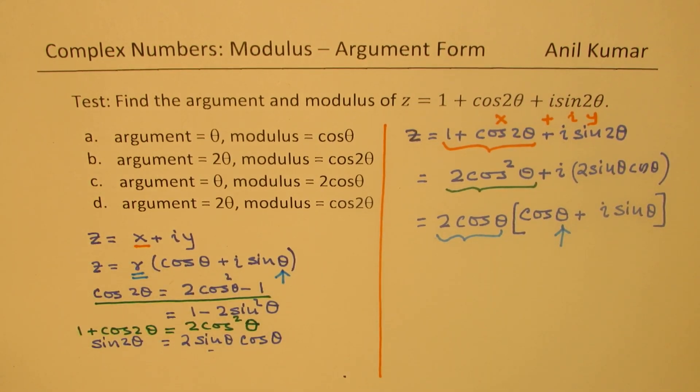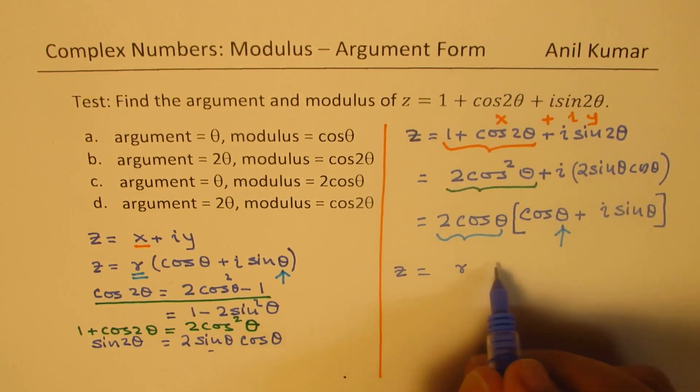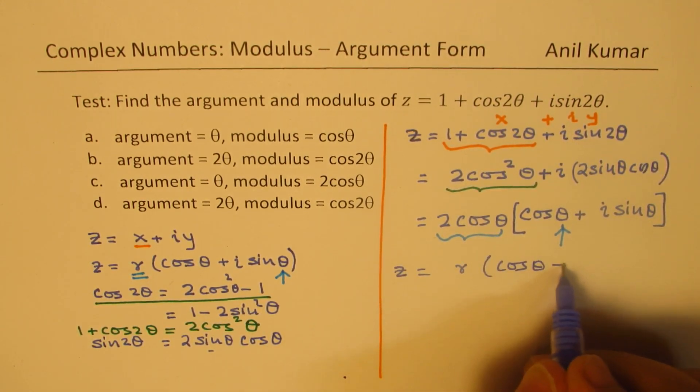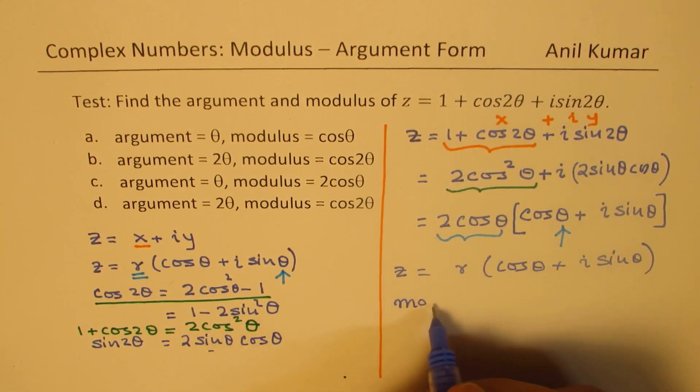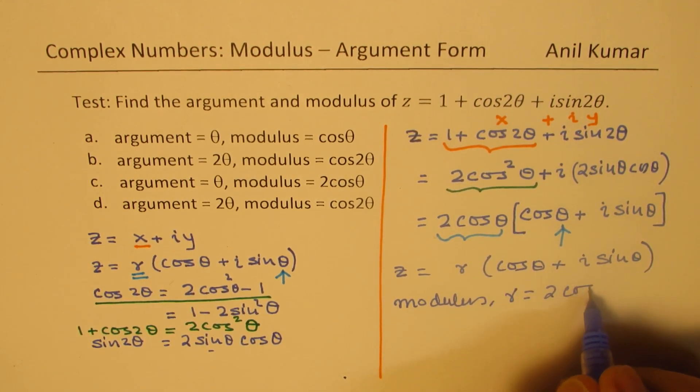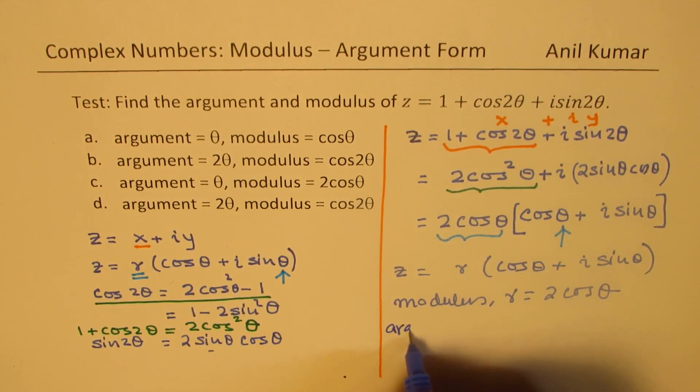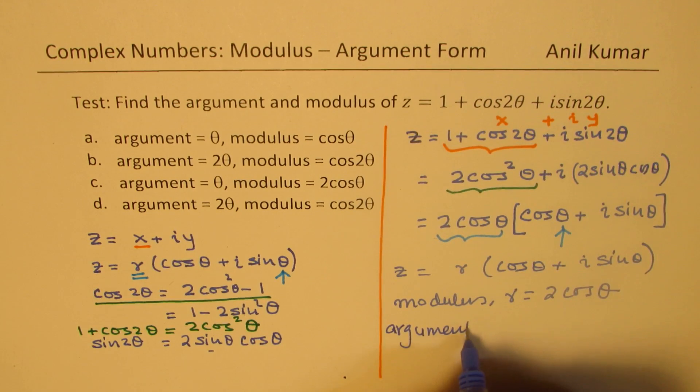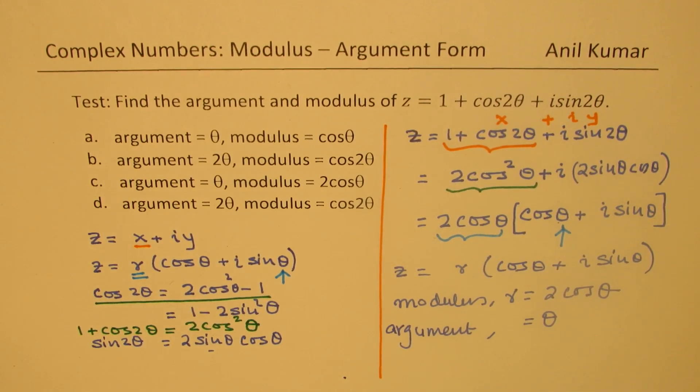Is it clear? Now, clearly, comparing with z equals to r cos theta plus i sine theta, we can write that the modulus r is equal to 2 cos theta, and argument is theta. That is how you are going to answer.